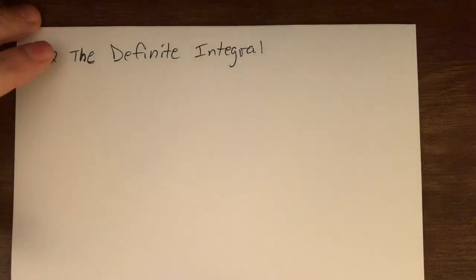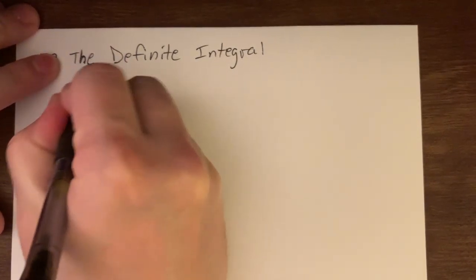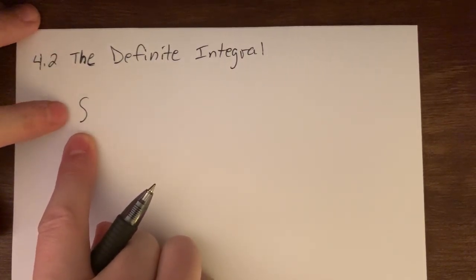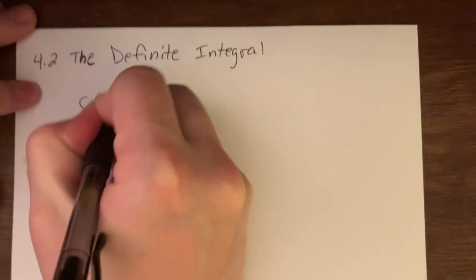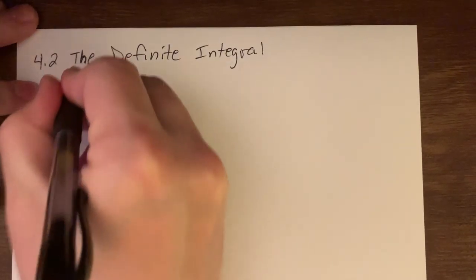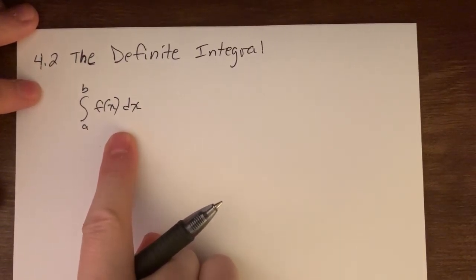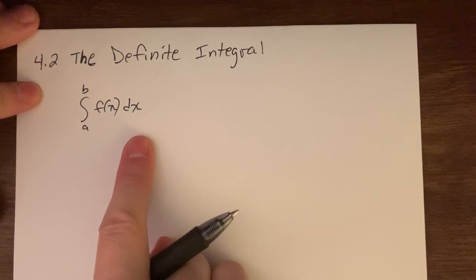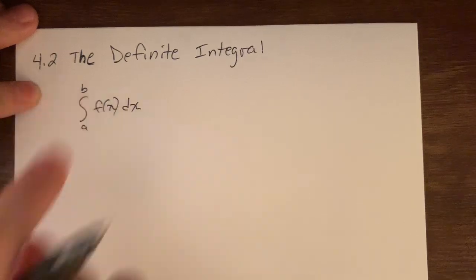So what is the definite integral? For notation, we use this integral symbol — that elongated 'S' — and we'll have the integral of f of x dx, with bounds: an 'a' on the bottom and a 'b' on the top. That is the formal notation for what we call the definite integral: the integral of f of x dx from x equals a to x equals b.